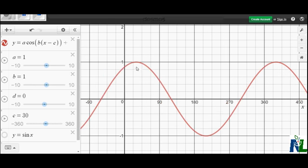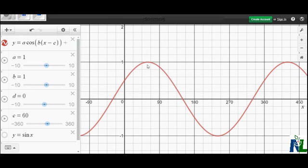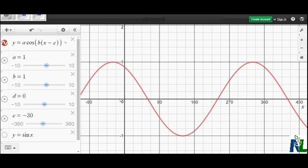If I make c 60, you'll notice that the graph shifts over 60 degrees. If I were to make c negative 30, then the graph will shift to the left, 30 degrees.